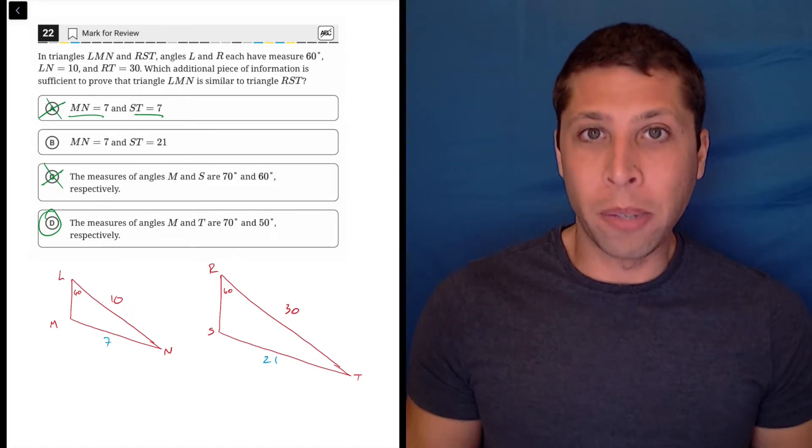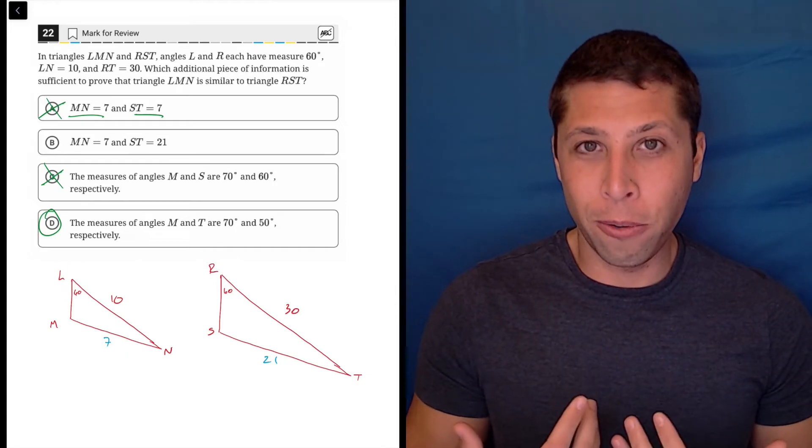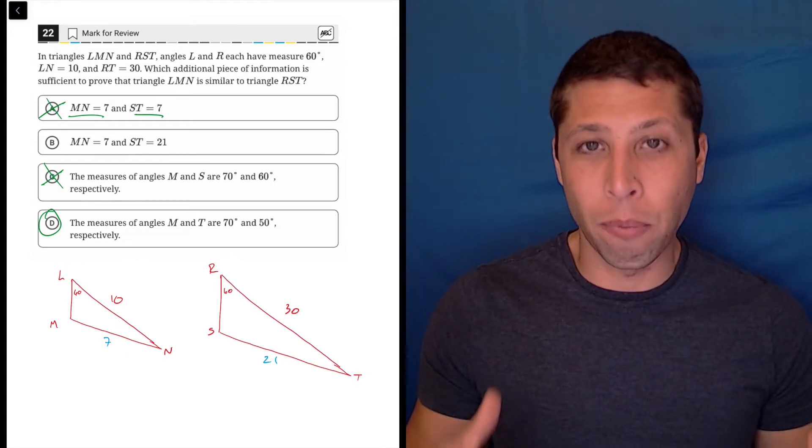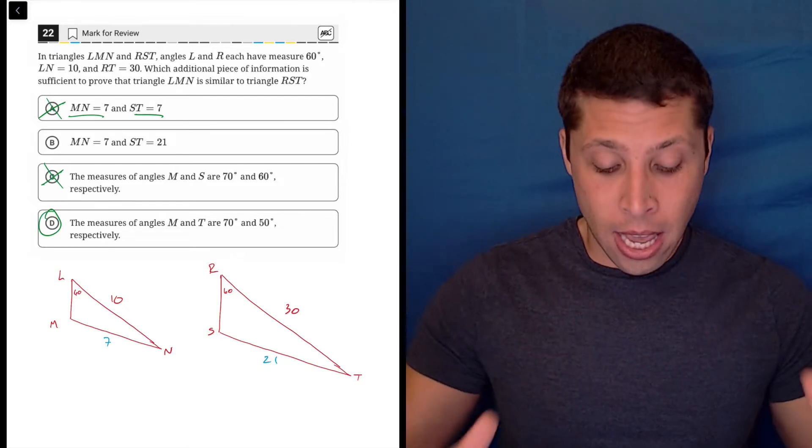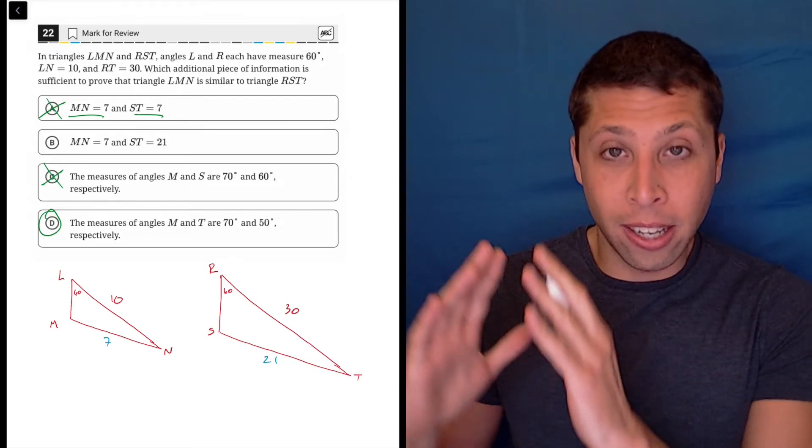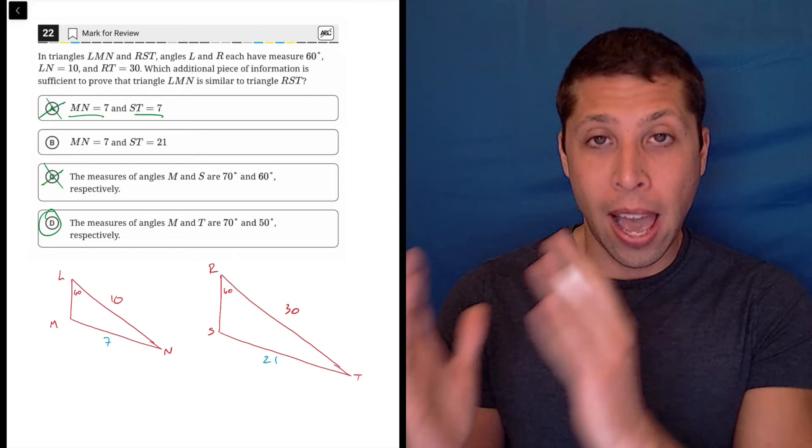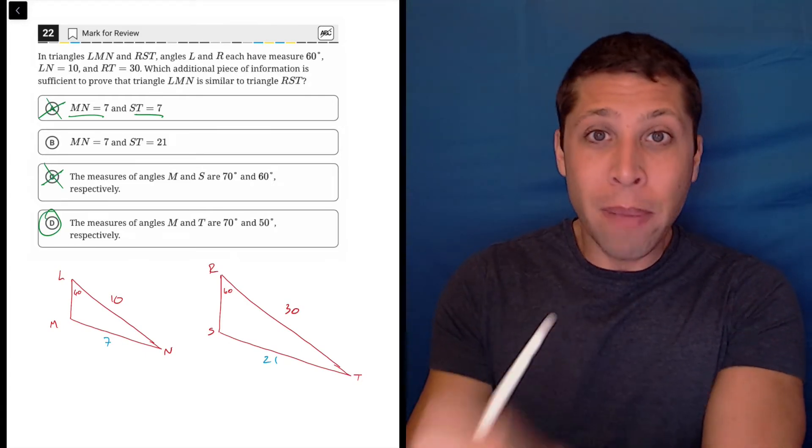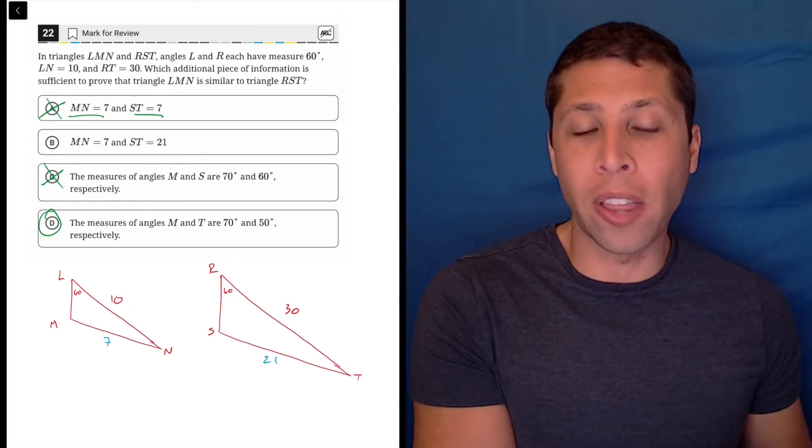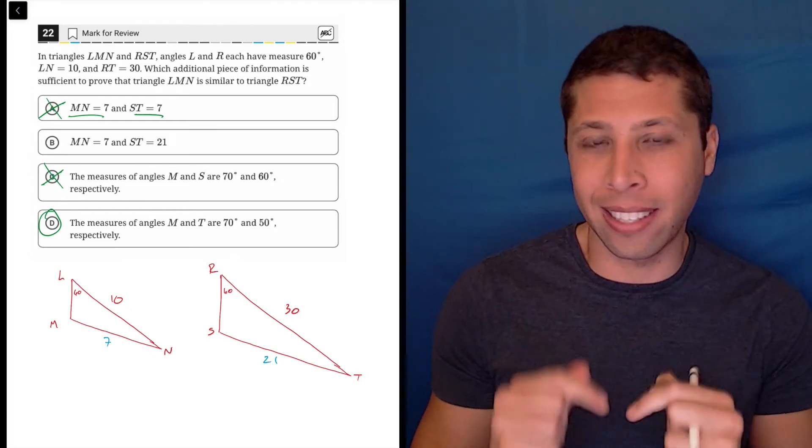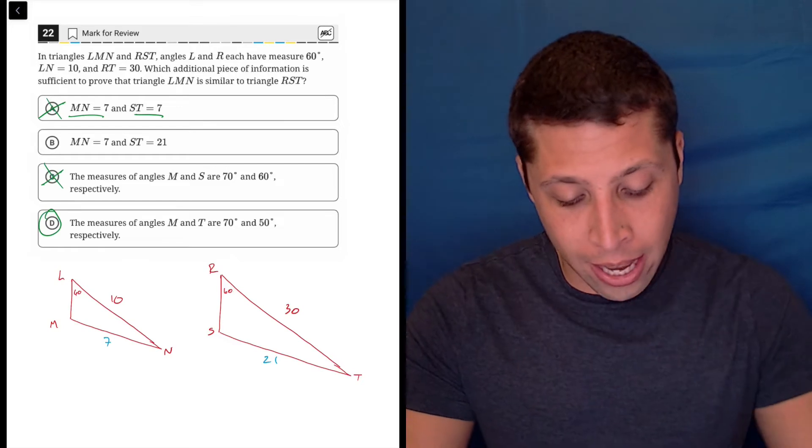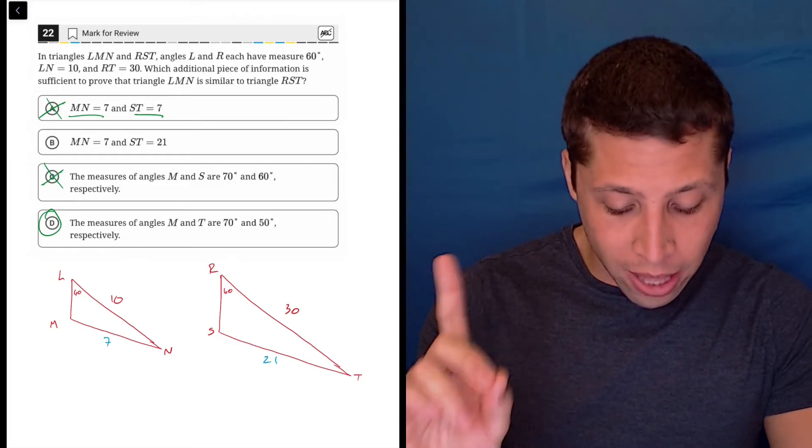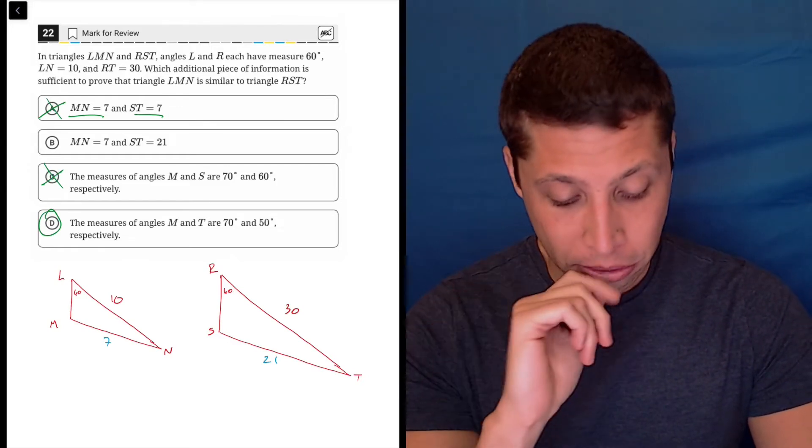The problem is we're assuming they're similar, and so in our brains it's hard to separate that from what we're actually supposed to do here. Our real task is to not assume that they're similar and then know what would come from that, but to have some information and then use that to prove that they are similar. Knowing the sides is not enough here, even though they would be in proportion, and it's because there is one other way that we could draw these triangles.